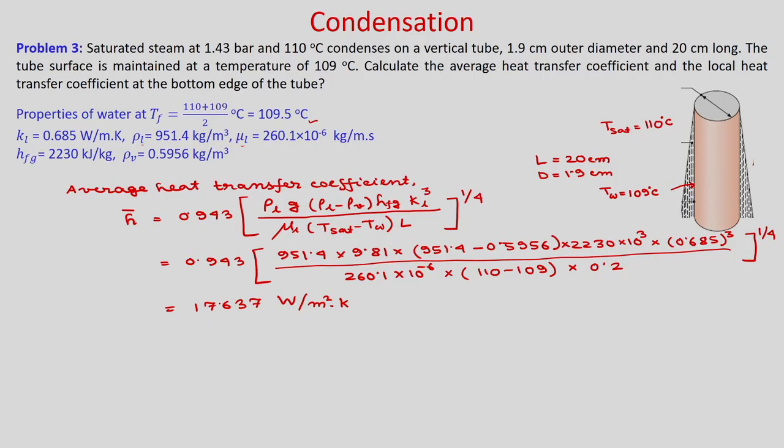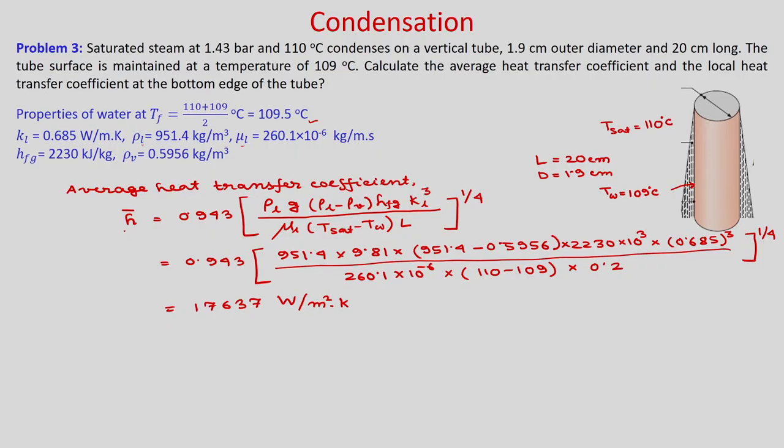When phase change occurs, the heat transfer coefficient is very high - of the order of 18000. Compare this to the average heat transfer coefficient for fully developed flow inside a circular pipe, which is 4.36 for constant heat flux. So phase change heat transfer coefficients are much higher than single-phase heat transfer. Now, knowing the average heat transfer coefficient, we can find the local heat transfer coefficient at the bottom edge.